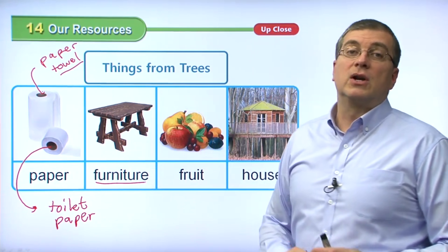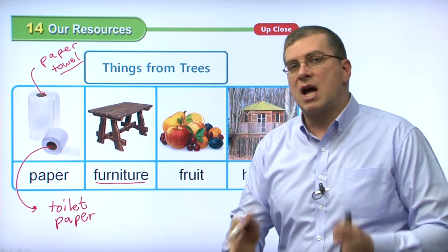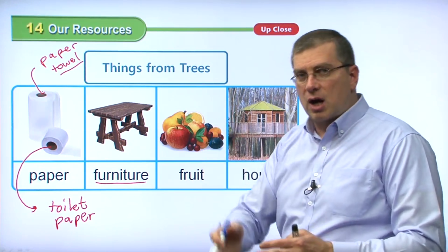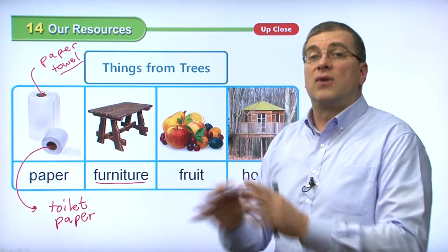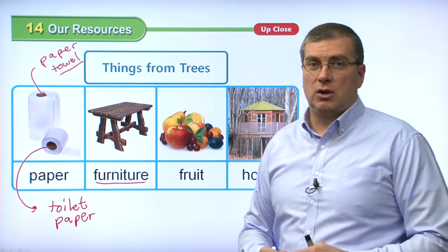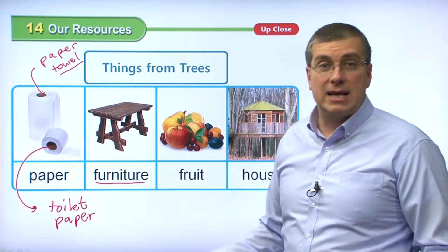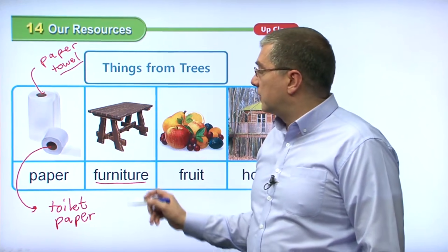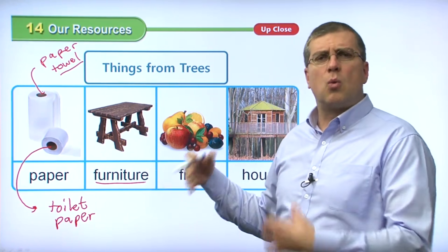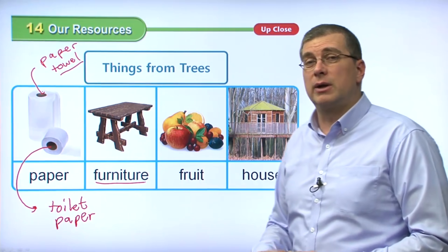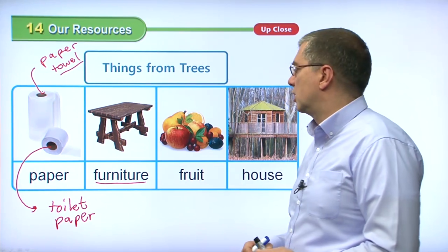Furniture — a lot of types of furniture are made from wood. By the way, do not say 'furnitures' — furniture is non-count. If there's a desk, a chair, and a table, we call that furniture. If you have many pieces of furniture, we still say furniture. So you have a desk, a chair, a bed, a couch — that's all furniture. Many pieces of furniture are made with wood. Wood has a nice warm feeling, making it a very good material for furniture.